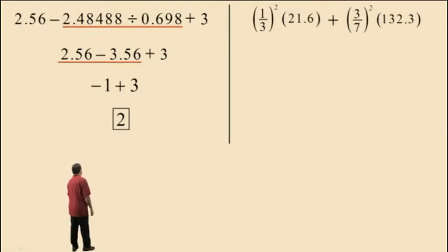Let's go to this next problem. Here we have 1/3 squared times 21.6 plus 3/7 squared times 132.3.